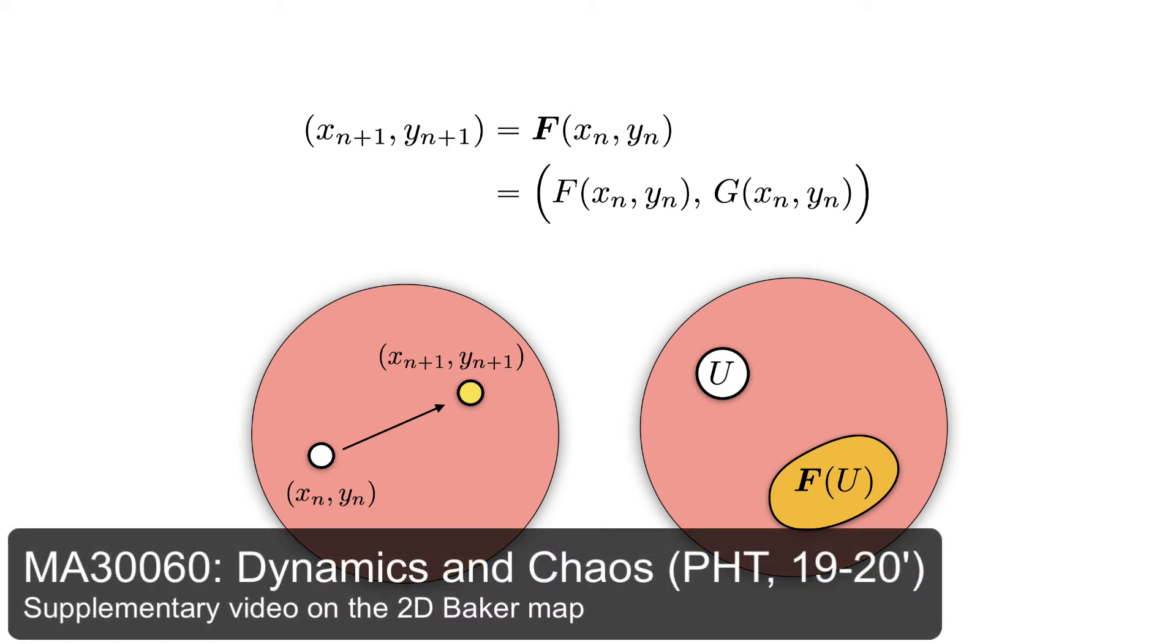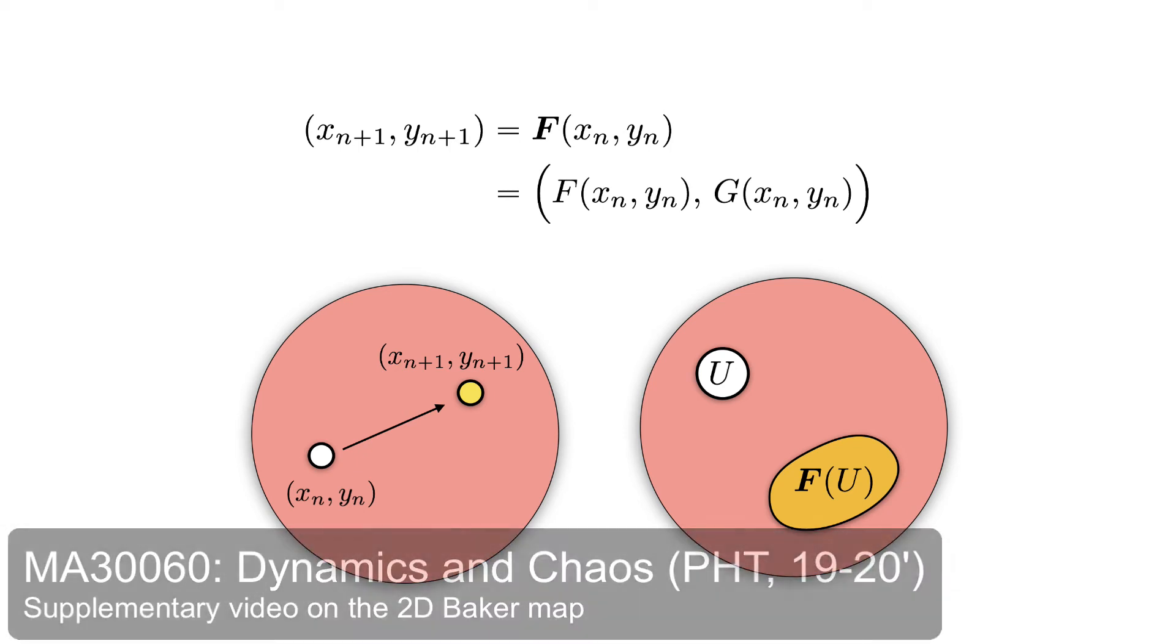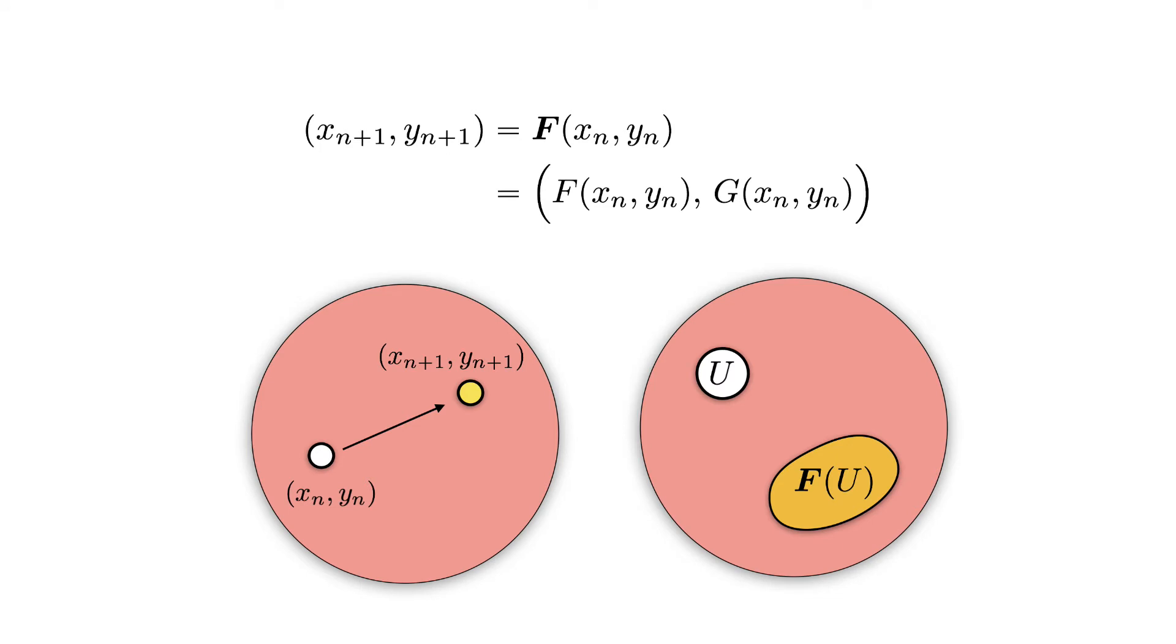This forms one of two videos planned on the topic of two-dimensional mappings, so mappings of the form that you see here. You can either think of (x_{n+1}, y_{n+1}) as being the output of a vector-valued function, bolded f, or you can think of x_{n+1} given by some scalar function F and y_{n+1} given by a scalar function G.